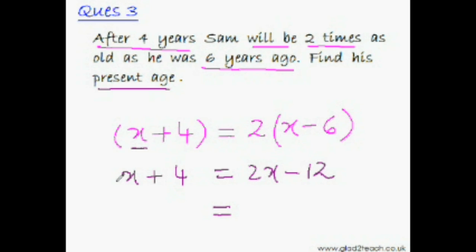x plus 4 equals 2x minus 12. So 2x minus x equals x, and 4 plus 12 equals 16. Therefore x equals 16. Sam's present age is 16 years. You see how easy it is to solve word problems? We just need to translate the English sentence into a mathematical equation.